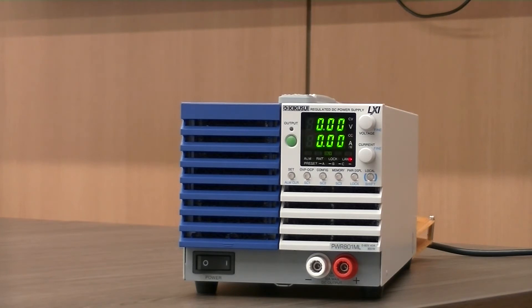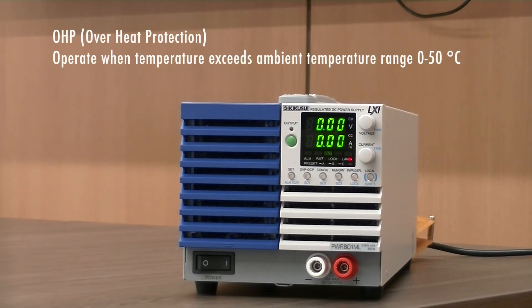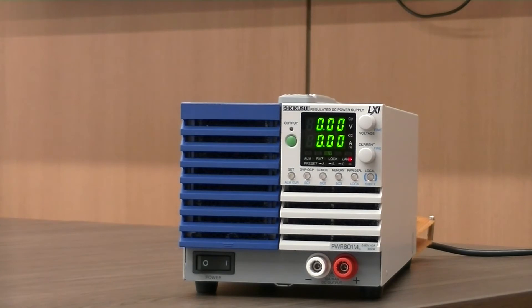This protection is activated when the PWR01's internal temperature rises to an abnormal level. This can be caused by a testing environment that exceeds the power supply's operating ambient temperature range, which is 0 to 50 degrees Celsius, when the air inlet or outlet port is blocked, or when a fan motor stops working.